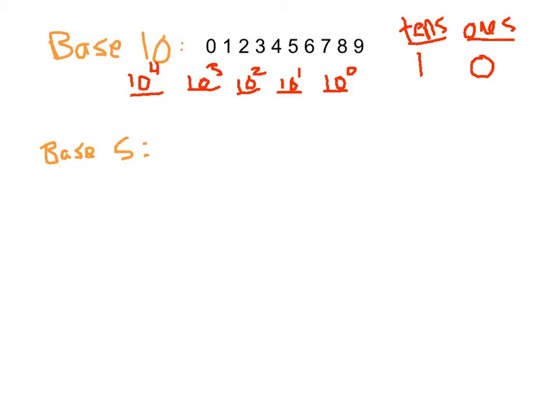In base 5, we're not going up by powers of 10 anymore — we're going up by powers of 5. So we don't use the digits 0 through 9; instead we use the digits 0, 1, 2, 3, and 4. Using just these digits, we can write a number in base 5 that represents 13 objects or 17 objects, but it won't be written as 1-3 or 1-7.